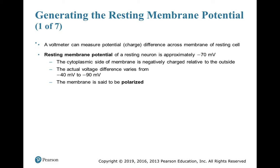We can measure the potential difference across the membrane using an instrument called a voltmeter. In a cell that is not being stimulated, this gives us the resting membrane potential. The resting membrane potential of a neuron is approximately minus 70 millivolts, meaning the cytoplasmic side of the membrane is negatively charged. The actual voltage can vary from minus 40 to minus 90 millivolts, but because there is a difference between the negative inside and positive outside, the membrane is said to be polarized.